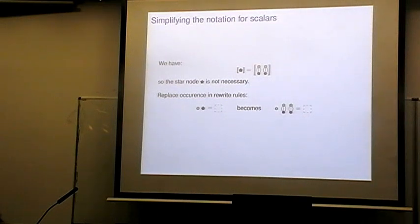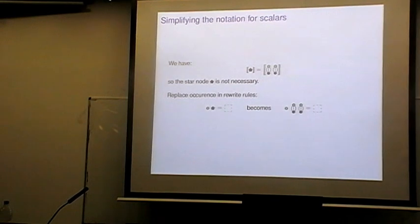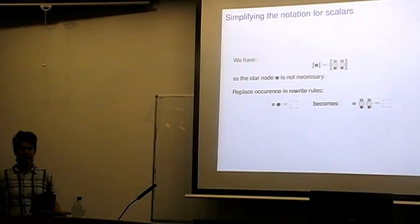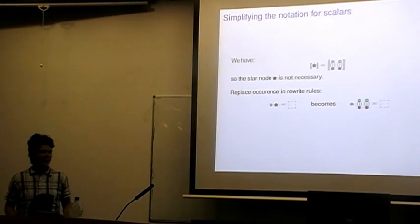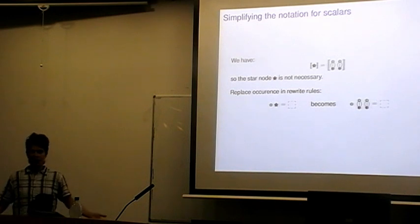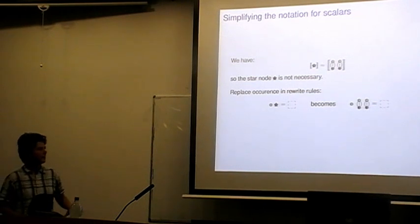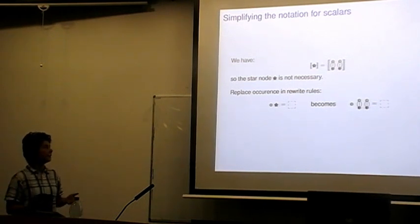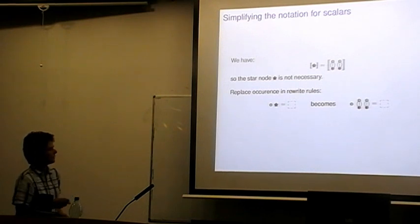First, we can simplify the notation. When I proved the completeness result for the stabilizer ZX calculus — where we're keeping track of scalars — I introduced the star node, because I'd gotten slightly confused about what numbers we could represent with diagrams. It turns out the star node is not necessary, because there's a diagram consisting only of spiders with exactly the same interpretation. So anywhere we use a star node, we can use this other diagram instead, completely eliminating the star rule from our calculus. It only appears in the one rewrite rule called the scalar rule, which we replace with another rule.